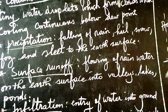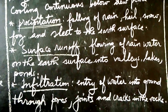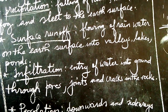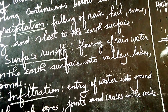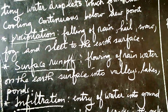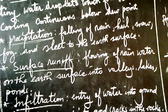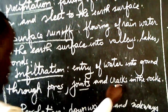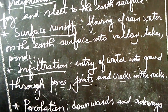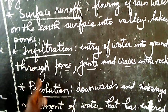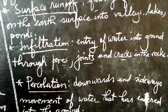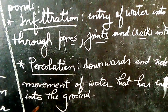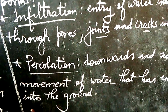We also have infiltration. When we talk of infiltration, this is the entry of water into the ground through pores. The rainwater which falls on the surface of the earth, some of the amount will enter and penetrate through the pores, joints, or cracks in the rocks. Finally, we have what we call percolation. This is the downwards and sideways movement of water that has entered into the ground.